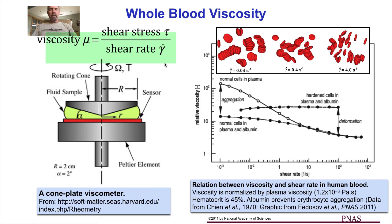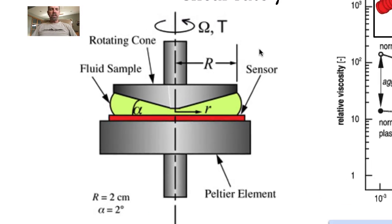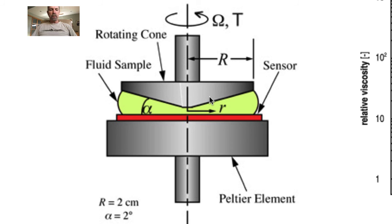And it is measured with a device called a viscometer, such as this cone and plate viscometer, in which the cone on top rotates with an angular velocity, producing a constant shear rate in the fluid between the cone and the stationary plate.